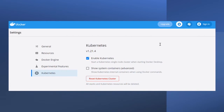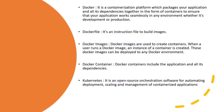Before jumping to the demo, let's take a look at some basic terms. What is Docker? It's a containerization platform which packages your application and all its dependencies together in the form of a container, so that your application works seamlessly in any environment, whether development or production. What is a Dockerfile? It's an instruction file used to build images. What are Docker images? Docker images are used to create containers.